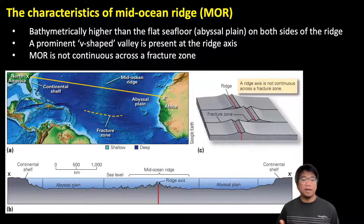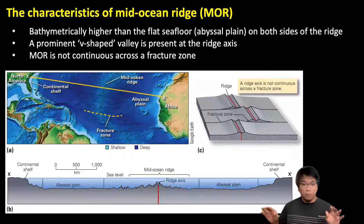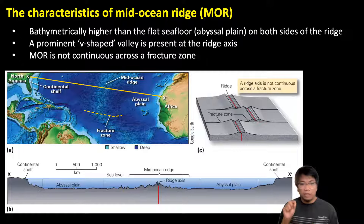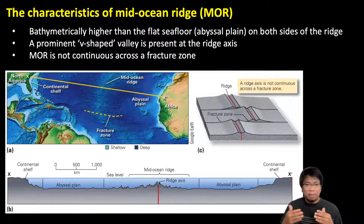Some characteristics of the Mid-Ocean Ridge: first, it is bathymetrically higher than the flat seafloor around it, or the abyssal plain on both sides of the ridge. It also has a prominent V-shaped valley present right at the ridge axis. And third, if we look at these ridges in more detail, we can see that the Mid-Ocean ridges are not continuous — they are offset across boundaries called fracture zones.